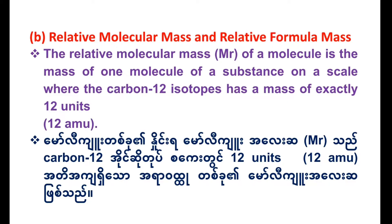Now listen to me. The related domain mass — or relative molecular mass — is the mass of one molecule of a substance, on a scale where the carbon-12 isotopes have a mass of exactly 12 units.